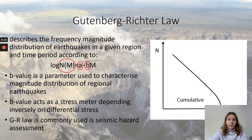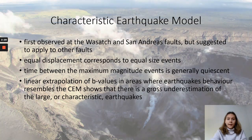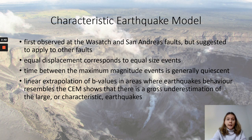In laboratory experiments, it has been shown that the b-value is inversely proportional to the differential stress. Whilst the Gutenberg-Richter Law is commonly used in seismic hazard assessment, geological investigations on some faults have led to the identification of another model for the magnitude-frequency distribution of earthquakes. The characteristic earthquake model phenomenon was first observed at the San Andreas fault. This model suggests that equal displacement along a fault corresponds to equal size earthquakes and the time between the maximum magnitude events is generally regular.